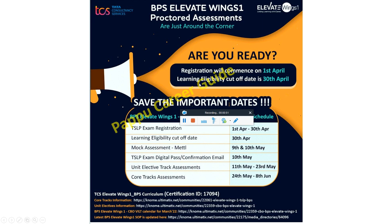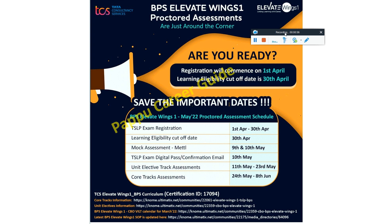So first, let's see the updates. BPS Elevate Wings 1 proctored assessments are just around the corner. TCLP exam registration already started and has already ended — 1st April to 30th April. Learning eligibility cutoff date is 30th April. Mock assessment is around 9th or 10th May. TCLP exam pattern pass confirmation email you will receive around 10th May. Elevate track assessment will be on 11th May to 23rd May, and code track assessment will be between 24th May to 8th June.